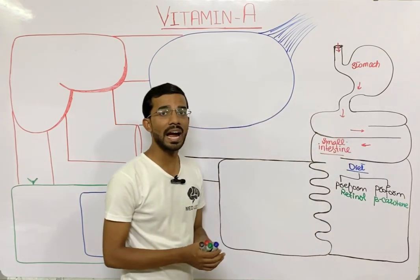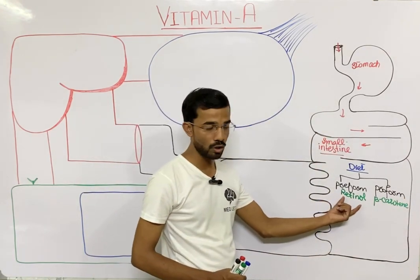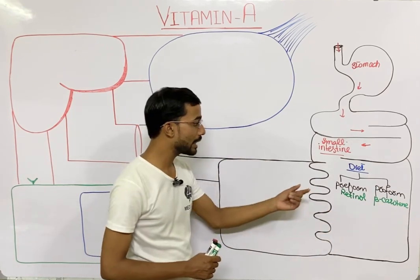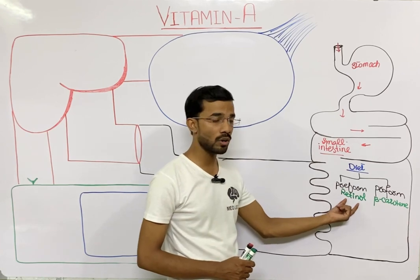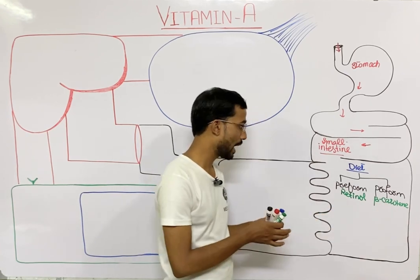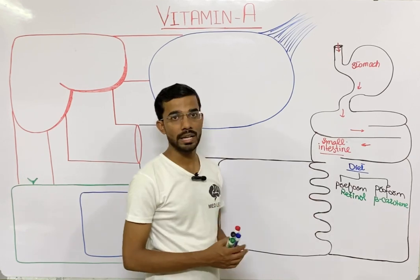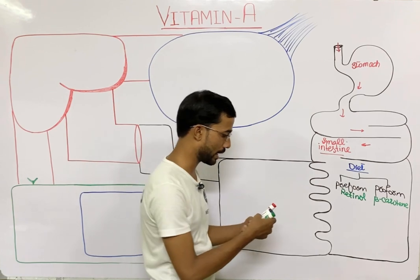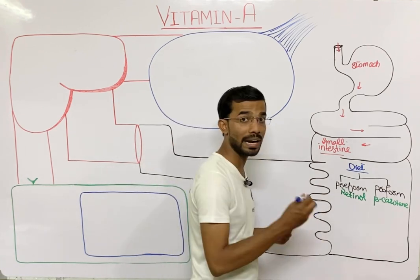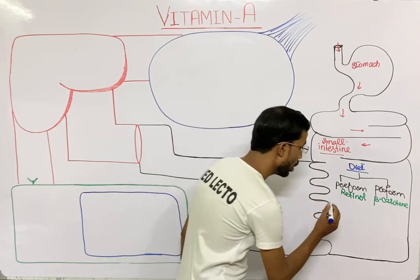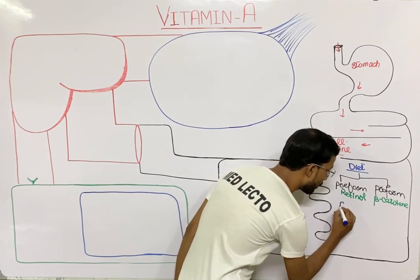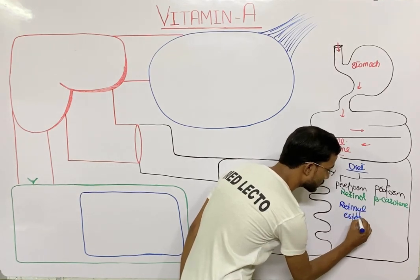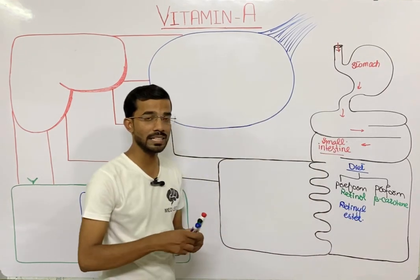Retinol comes from animal sources and beta carotene comes from plant sources. Importantly, retinol is present in the diet in the form of retinol ester — that is the most important thing to remember.